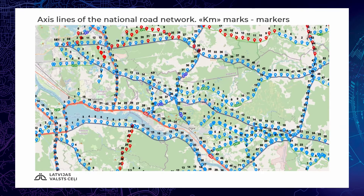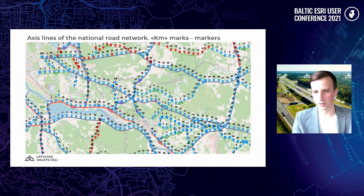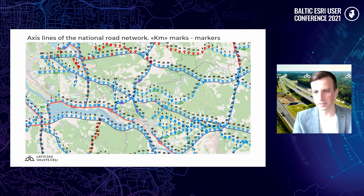To ensure as accurate information on road locations as possible for both state information systems and the public, information on classes, locations, and ownership of state roads was updated regularly. However, all this work didn't give the result we wanted. We still had the same challenges: a lot of lines, a lot of kilometer markers, but we couldn't find specific points with specific addresses.